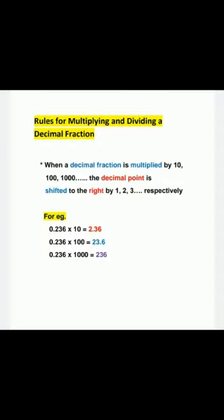Today, we are going to learn and discuss the rules for multiplying and dividing a decimal fraction. Now children, when a decimal fraction is multiplied by 10, 100, 1000 and so on, the decimal point is shifted to the right by 1, 2, 3 and so on places respectively.